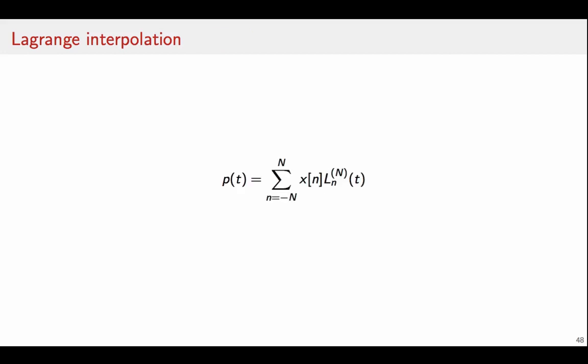With Lagrange interpolation, the continuous time interpolation is defined by this formula, which is a linear combination of functions here that depend in highly nonlinear ways both on the length of the interpolation interval and on the index of the interpolation point.